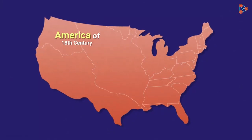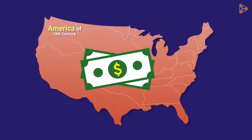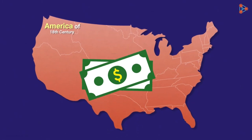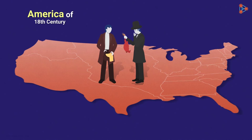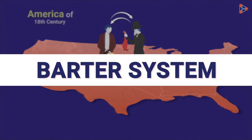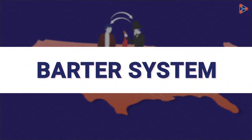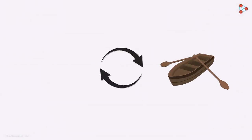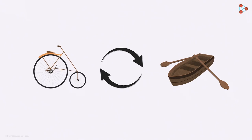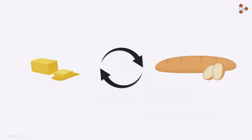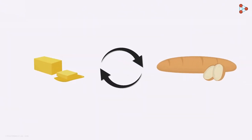At that time, the US dollar was not invented, and thus people traded in the form of goods or commodities. This kind of trade is referred to as the barter system. The simplest example would be exchange of a boat for a bicycle, or exchange of bread for butter, and so on.